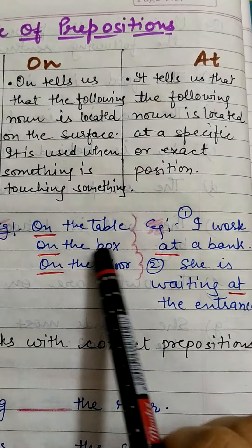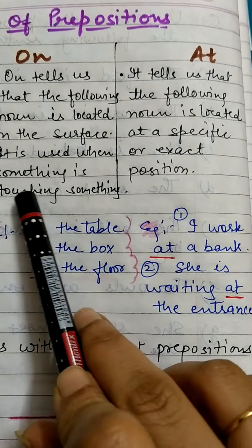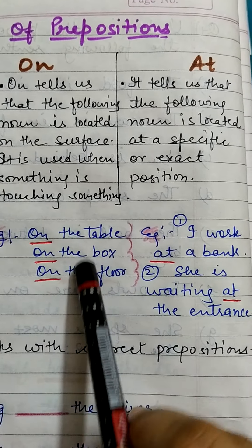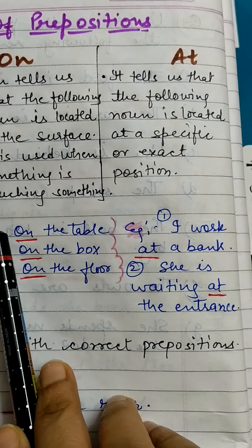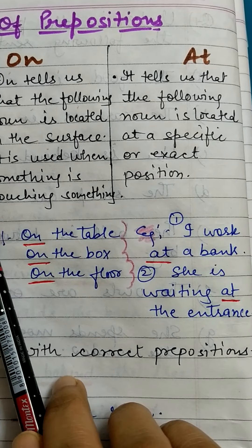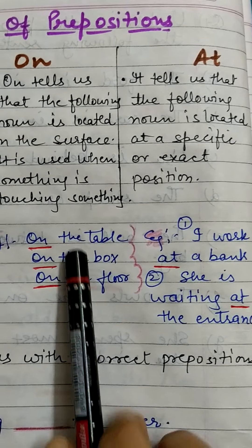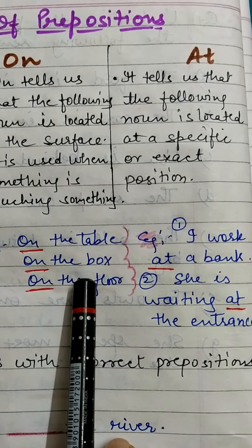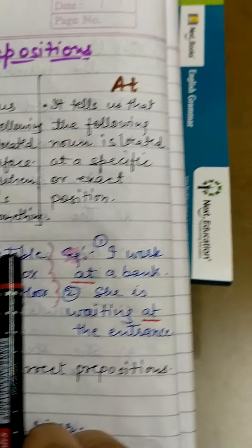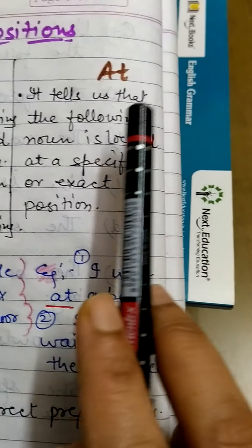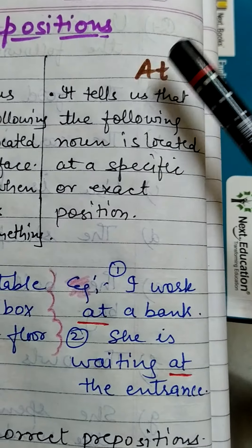Examples of 'on' include: on the table, on the box, on the floor. We use 'on' with nouns or pronouns that are touching a surface. Now let us move forward to another preposition, which is 'at.'